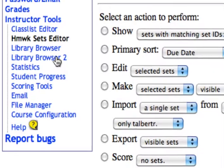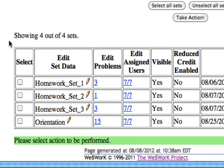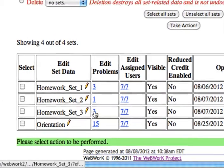Go to the homework sets editor in the left sidebar, and next to homework set 3, click the link under Edit Problems.